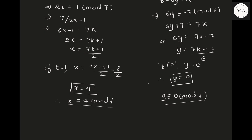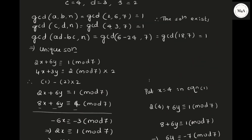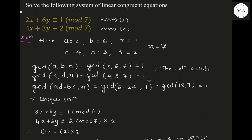So these are the solutions: x ≡ 4 (mod 7) and y ≡ 0 (mod 7). This is how to solve the given system of congruence equations. This question has been asked in your model question paper, so it is important. In the next class, I am going to discuss the next topic: Wilson's theorem. Till then, keep practicing. If you have any doubts, do comment in the comment box. Please subscribe and support the channel.